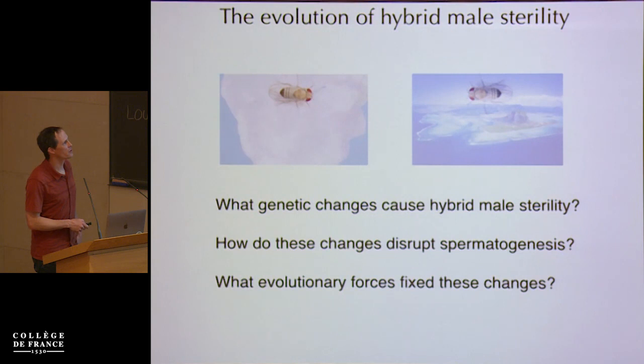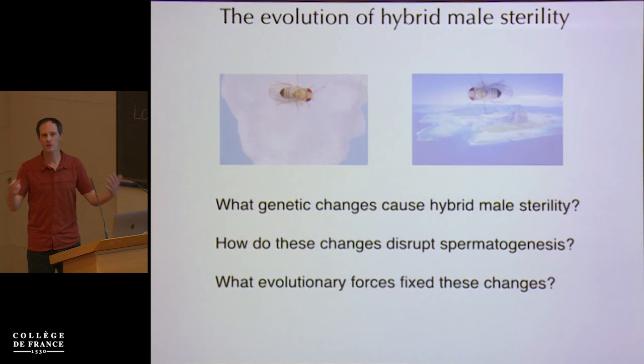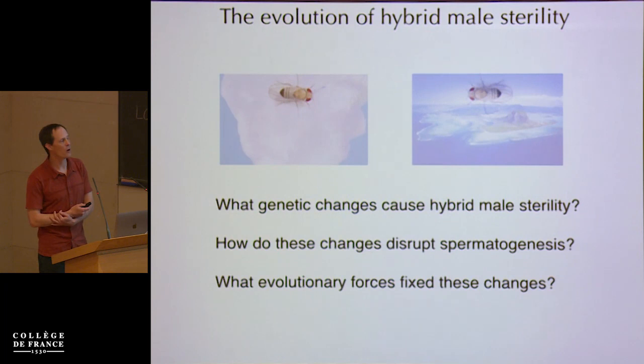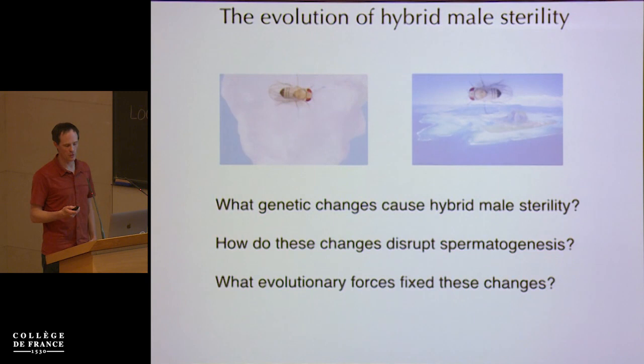In my lab, we're interested in trying to figure out what happened in those 250,000 years between these two very similar species that have been exchanging genes, and yet the genome is at least 15-fold sterile. So what are the genetic changes that cause it? How do those disrupt spermatogenesis? And ultimately, we'd like to know what evolutionary forces drove those mutations to fixation.